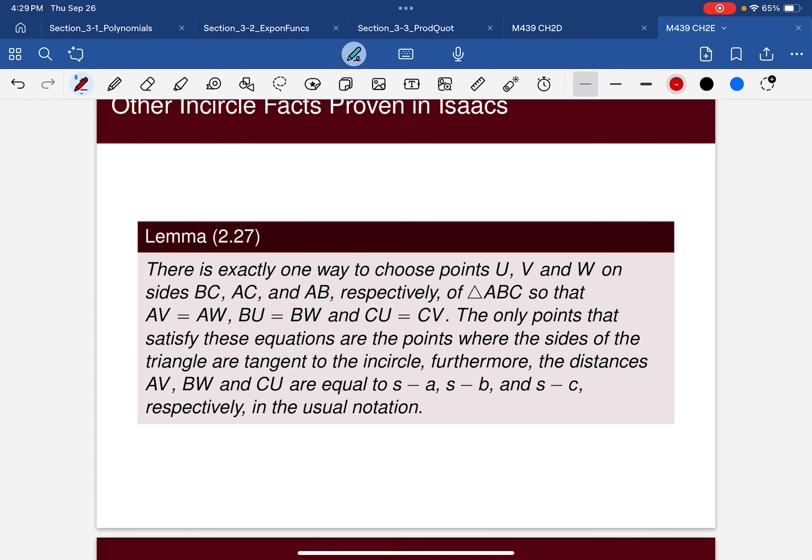Which says there's exactly one way to choose points U, V, and W on sides BC, AC, and AB, so that each of these lengths are the same, AV equal AW, BU equal BW, and CU equal CV.